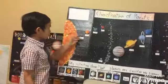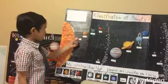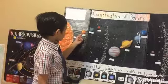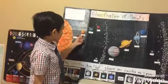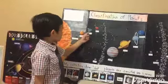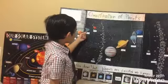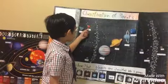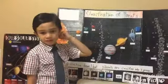Mercury orbits the sun for 88 days. Venus orbits the sun for 224.7 days. Earth orbits the sun for 365 days. Mars orbits the sun for 687 days.